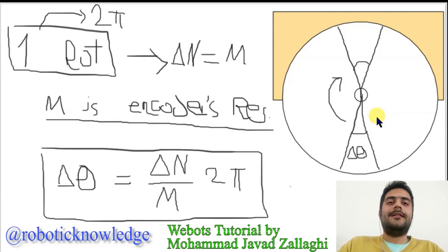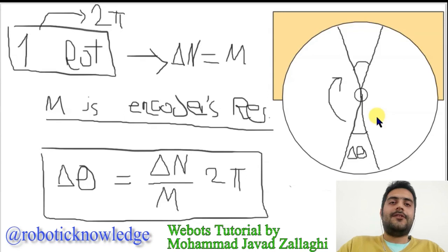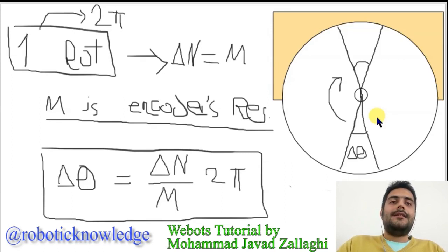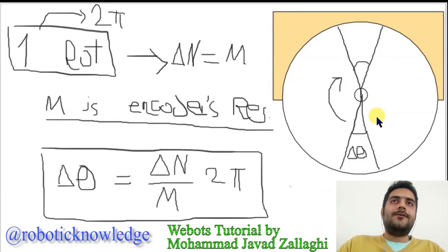For example, when a wheel is under rotation and after one rotation, if we monitor the change in the feedback of the encoder, you can see that it's equal to the resolution of the encoder.